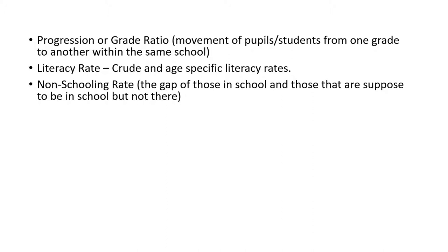Now we have the non-schooling rates — that is the gap between those in school and those that are supposed to be in school but are not. This is quite critical because if, for example, you have the school-going age from age 6 to age 22 and you don't find most of them in school, it is something worrisome that you need to address. When you divide and multiply by 100, you get the percentage of those not in school.